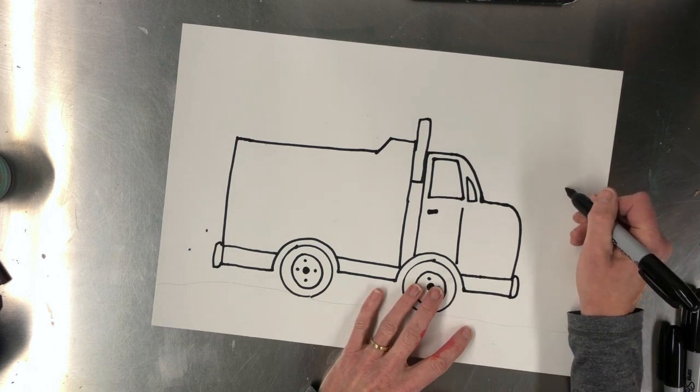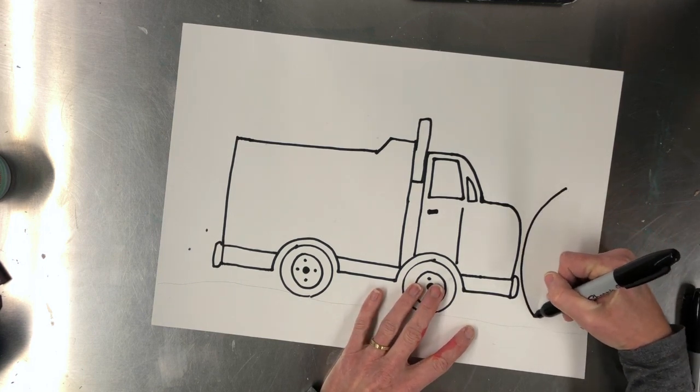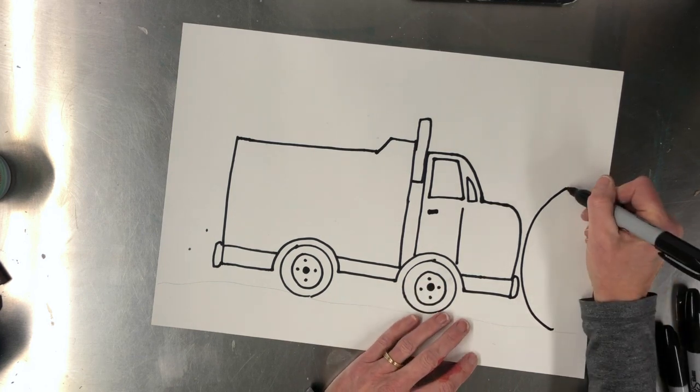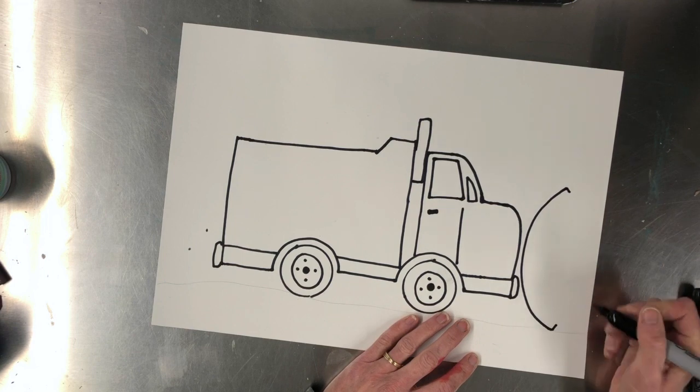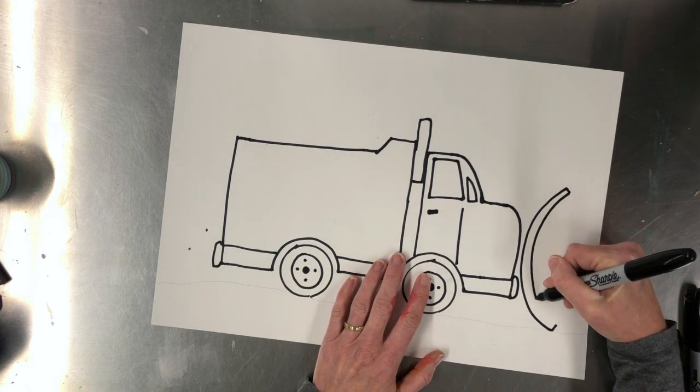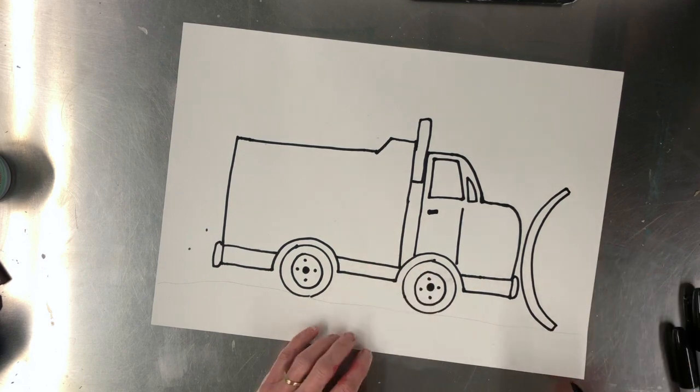And then last thing we need to do is put the snow plow on. So you're going to start up here and just sweep down, make a wide open C. And you can give it two notches on the end and follow that again for your snow plow.